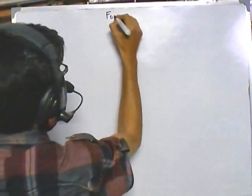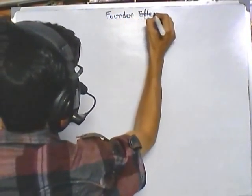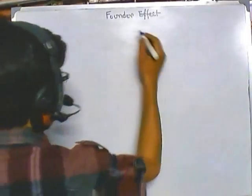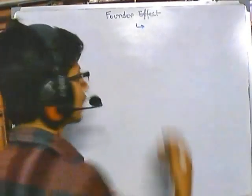Welcome back friends. In this video tutorial we'll be talking about founder effect. So what is founder effect? Founder effect is the variance or change in the genetic diversity of a population when the population is split and a few individuals from a parent population migrate to another location to form a new population. If I draw, it simply means it's the reduction in the genetic diversity.